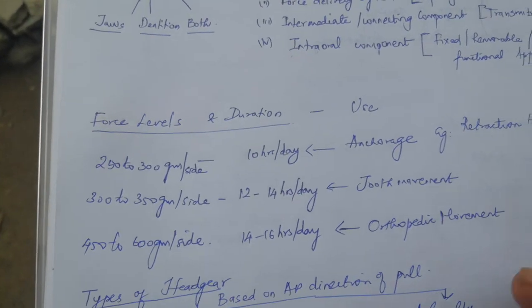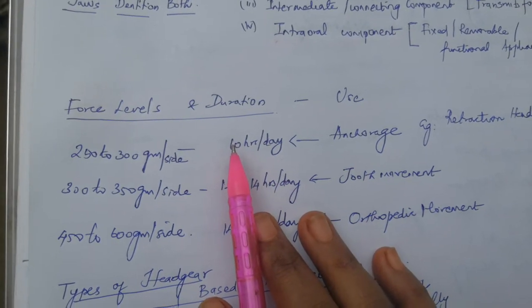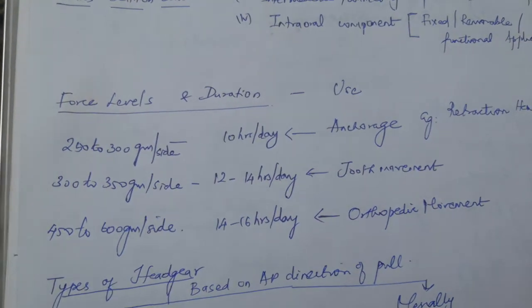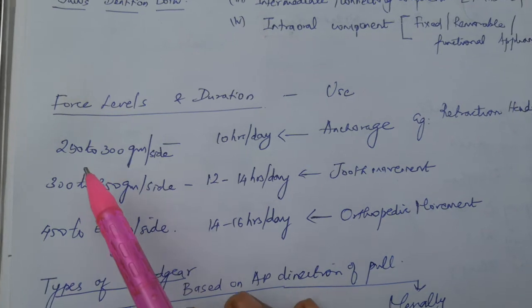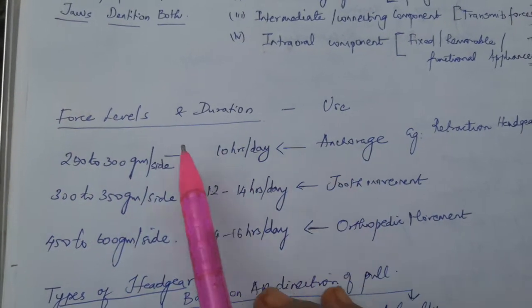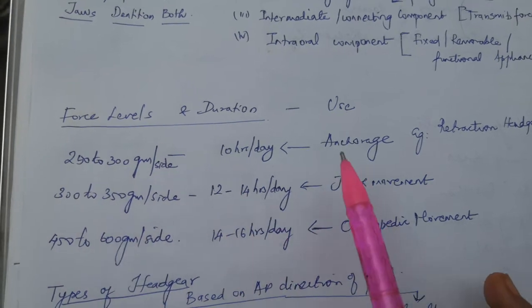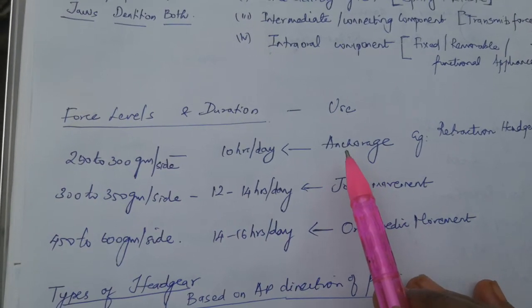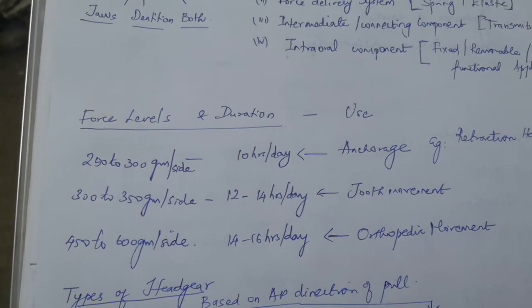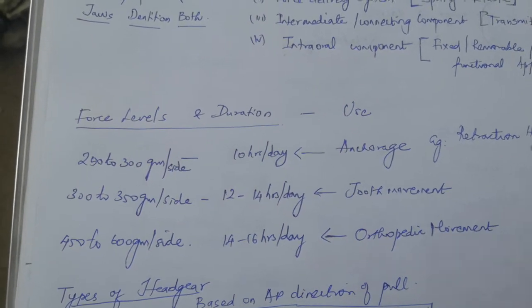To achieve a proper skeletal outcome using these extraoral appliances, we need certain amounts of force for each target. For anchorage, it will be around 250 to 300 grams per side.